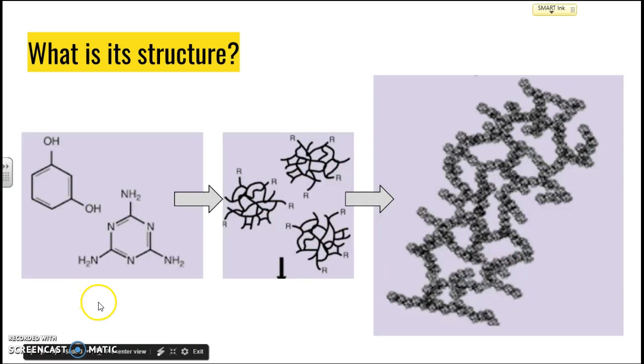So what it is, is it's made up of two different things. We've got benzene groups right here. The difference between them is we've got alcohol groups on one of them and amine groups on the other. Now we go through a process called polymerization, and what we end up with is a series of networks until we get a giant netting of them.